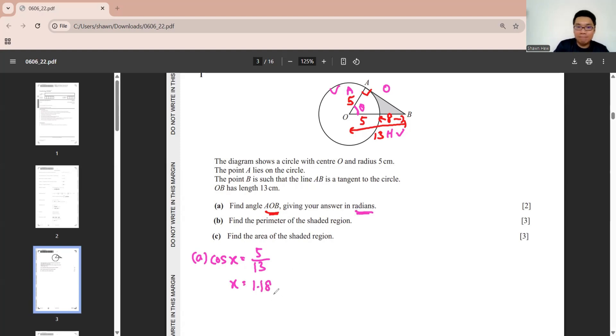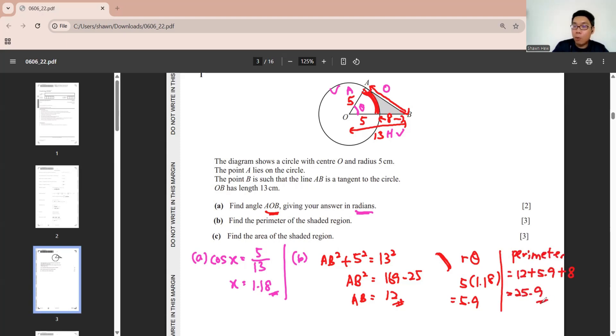Part B. The perimeter of the shaded region. So to find AB using Pythagoras equals to the hypotenuse squared. Then we'll find this curve using R theta. 5 times 1.18 is 5.9. And then here we know it's 8. Perimeter equals to the sum of these 3, which is 25.9.